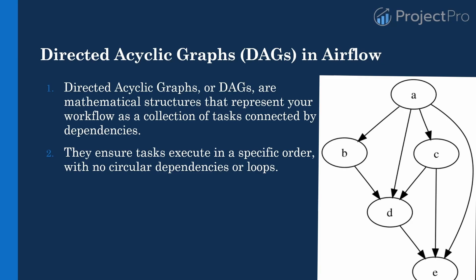Once tasks A, B, and C complete, then D proceeds to E, which has dependencies on A, C, and D. B and C are dependent on task A, so once task A completes, it will proceed to B and C, then D completes, and only then will task E trigger. These tasks have dependencies on the previous task and must be executed in a specific order.